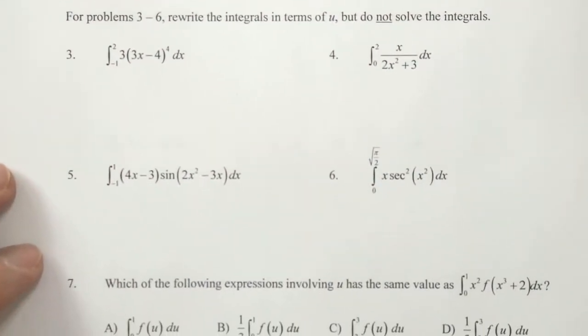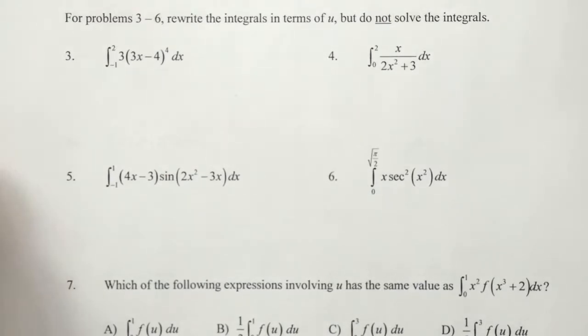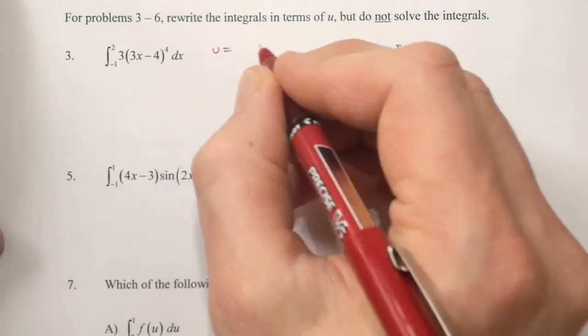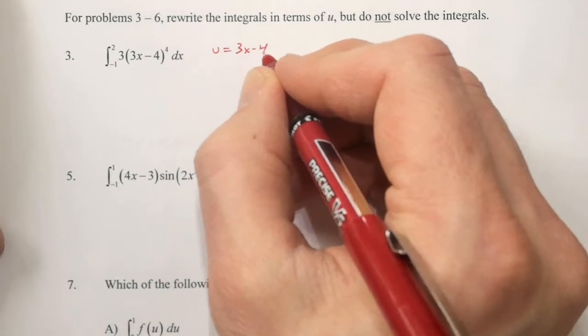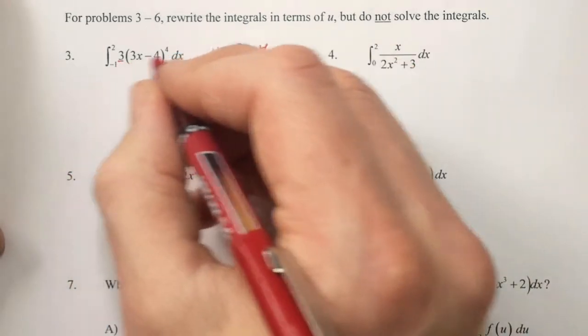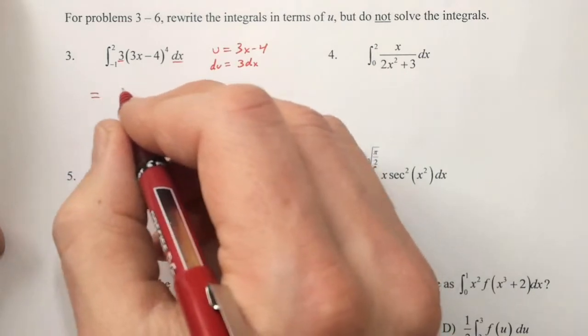Numbers 3 through 6 are very similar, with the exception that I have not told you what u is equal to. You have to choose correctly. For number 3, hopefully you chose u to be 3x minus 4. This makes du equal to 3dx, which we have, so we can write our substitution.